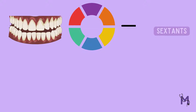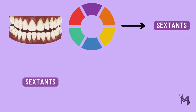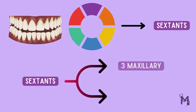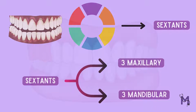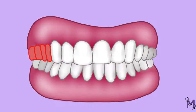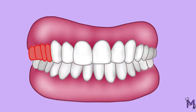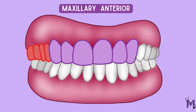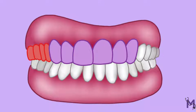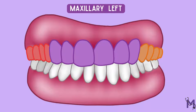In this index, we divide the patient's dentition into six parts known as sextants. The six sextants are divided into three maxillary and three mandibular sextants. The maxillary sextants comprise of the maxillary right, including the teeth from 1.8 to 1.4; the maxillary anterior, which includes the anteriors 1.3 to 2.3; and lastly the maxillary left, including the teeth from 2.4 to 2.8.